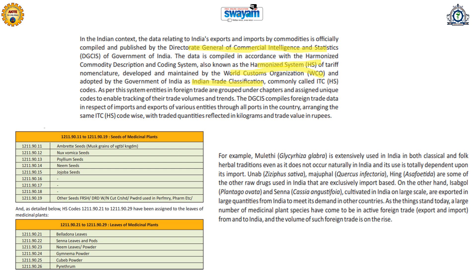For example, mulethi, Ziziphus sativa (unab), majufal (Quercus infectoria), and hing which we commonly use in our kitchen — these crude drugs or plants are not cultivated in India and hence India is totally dependent on their import. While senna and isabgol are cultivated in India and hence India exports these medicinal plants.